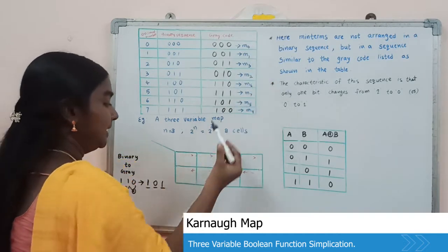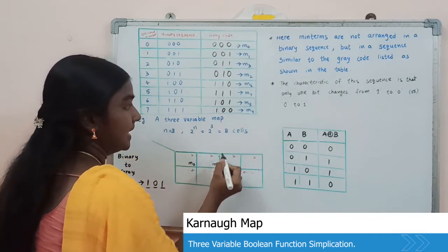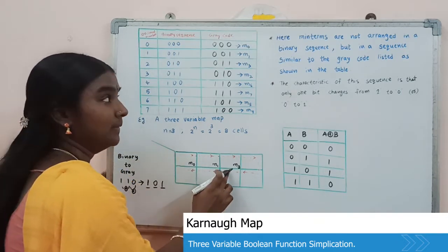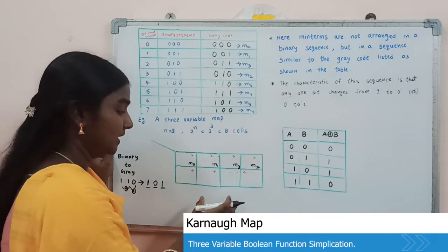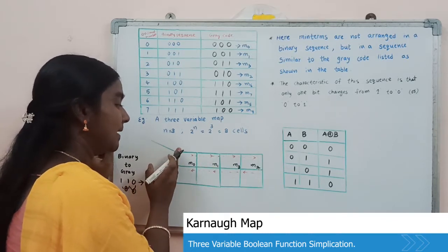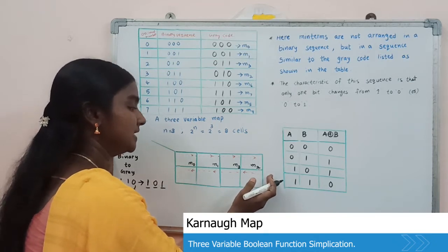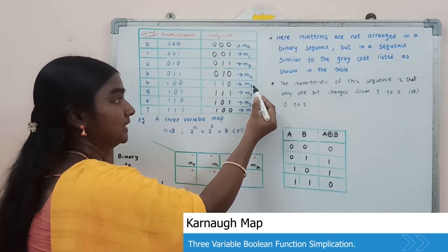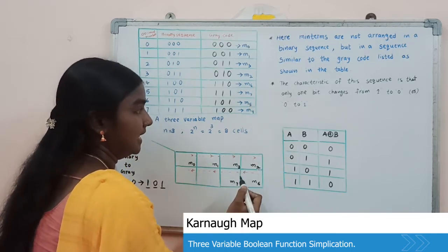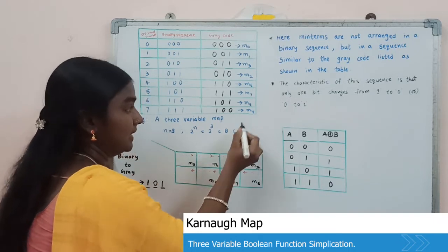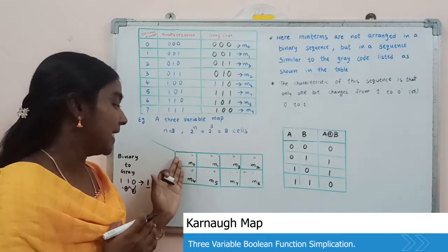The min term arrangement starts with M0, then M1, M3, and M2 in the first row from left to right. For the second row, we arrange from right to left: after M2 comes M6, then M7, M5, and M4. In this manner, by considering the Gray code, we arrange min terms from M0 to M7.